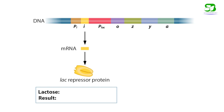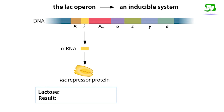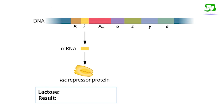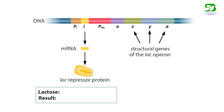The lac operon is an example of an inducible system in which the presence of an inducer molecule — in this case lactose — results in the expression of structural genes in the operon. These structural genes are lacZ, lacY, and lacA. Genes can be transcribed into mRNA and translated into protein.